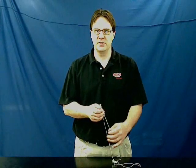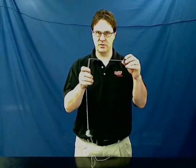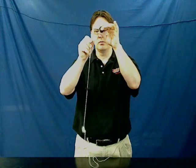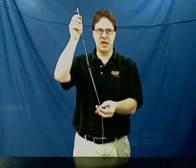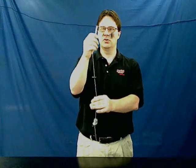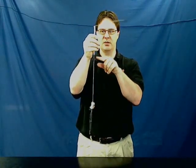The first experiment that you can have the students do is centripetal force in a horizontal circle. You have the students spin a rubber mass around in a circle. A spring-loaded stopper prevents this from going beyond a certain distance, and then you have washers to act as a counterweight. The students spin this around so this doesn't touch the bottom.